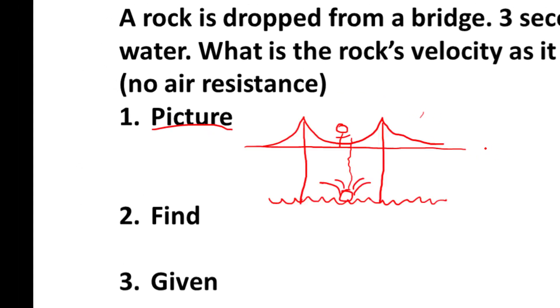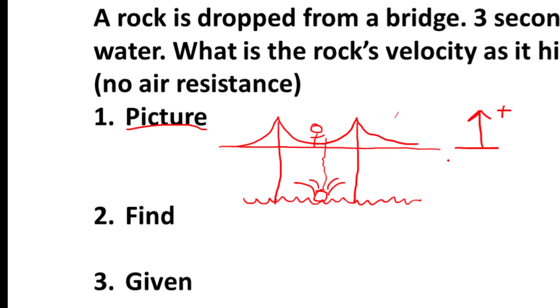I've drawn my picture here. I want to establish a direction. So I'm going to say that up is the positive direction. If I was worried about how far it fell, I may need to establish a zero position. It could be here at the bridge deck or at the water level. Next to find: What are we trying to find here? For a little physics shorthand, our final velocity is what we're trying to find.